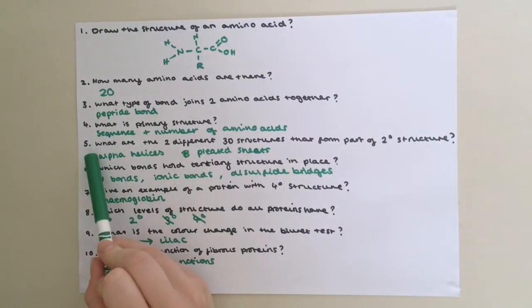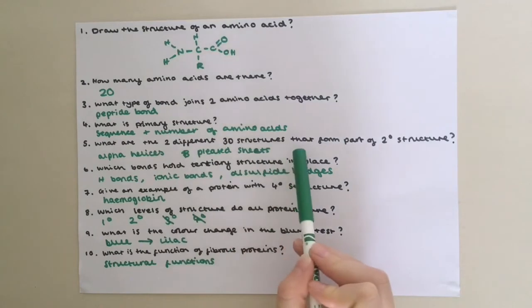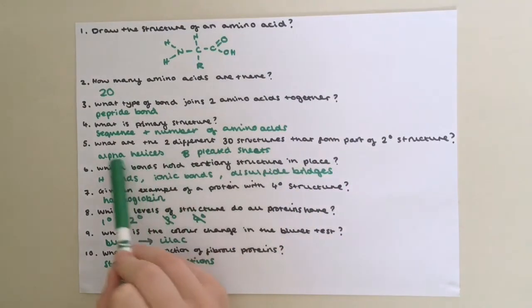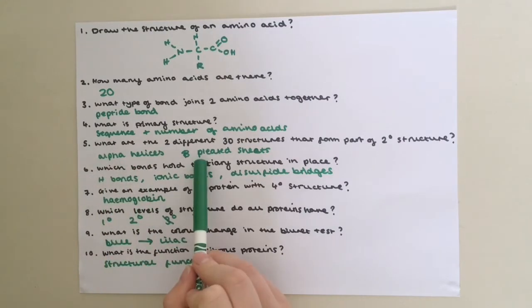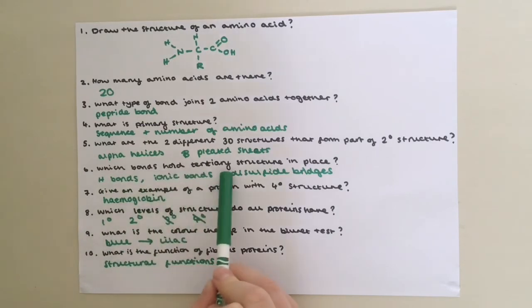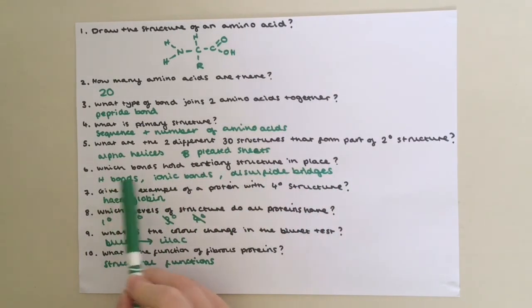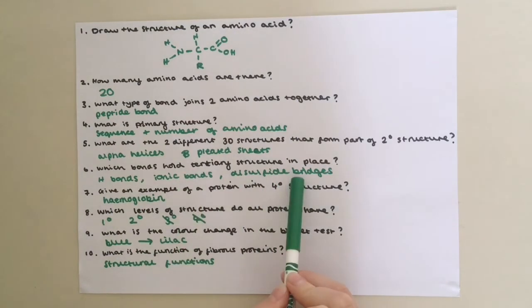Question five: What are the two different 3D structures that form part of secondary structure? It's alpha helices and beta pleated sheets. Question six: Which bonds hold tertiary structure in place? You've got hydrogen bonds, ionic bonds and disulfide bridges.